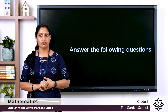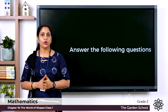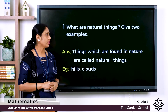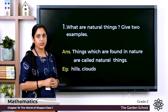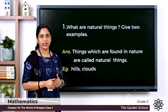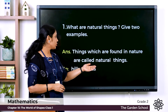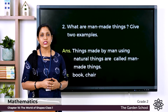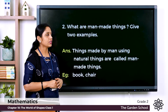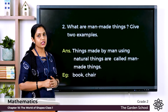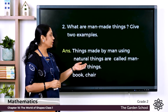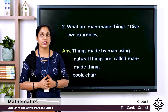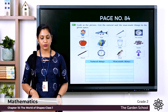Now for written answers in your notebook. Take a new page and write the heading 'Natural and Man-made Things.' Question 1: What are natural things? Give two examples. Answer: Things which are found in nature are called natural things. Examples: hills, clouds. Question 2: What are man-made things? Give two examples. Answer: Things made by man using natural things are called man-made things. Examples: book, chair.